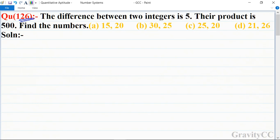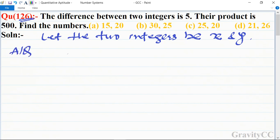So first of all, let the two integers be x and y. According to the question, the difference of the integers is 5, so x minus y is equal to